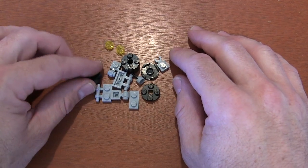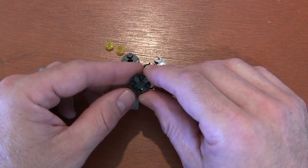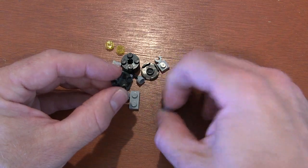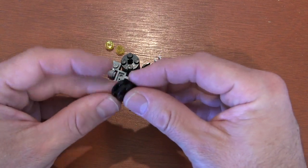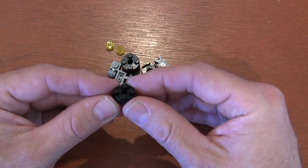The first thing we're going to do is grab one of these 1x2 boat stud pieces. And on top of that boat stud piece, we're just going to get a regular 2x2 round plate and put them together like this. And we have the bottom of our canister.